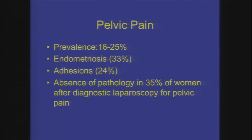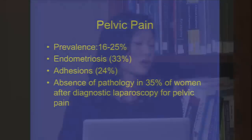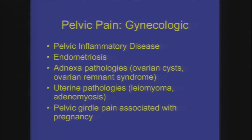Pelvic pain is relatively common, with prevalence ranging from 16 to 25 percent. Many times in terms of gynecologic causes, endometriosis is high on the list. Other causes include adhesions after surgery. Unfortunately, there's no clear pathology in over a third of women even after diagnostic laparoscopy. Gynecologic causes include pelvic inflammatory disease from sexually transmitted diseases, endometriosis, ovarian pathologies, uterine fibroids, and adenomyosis.